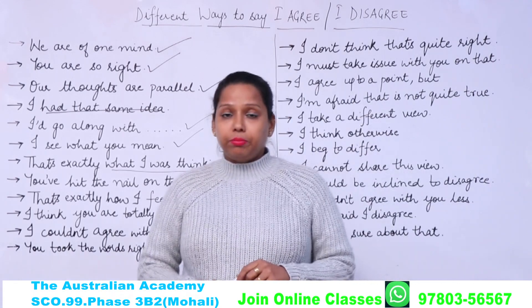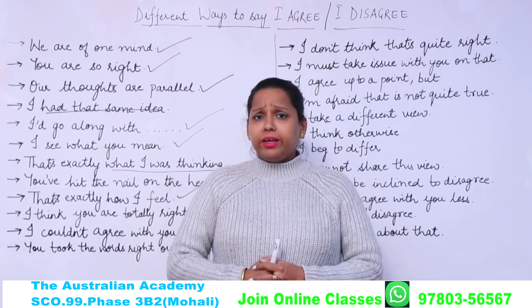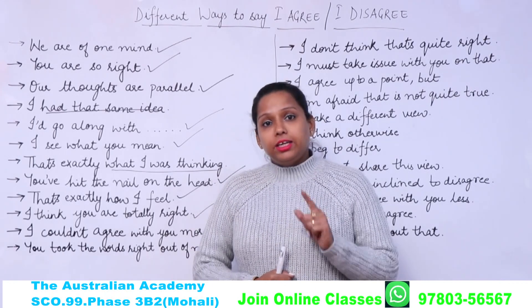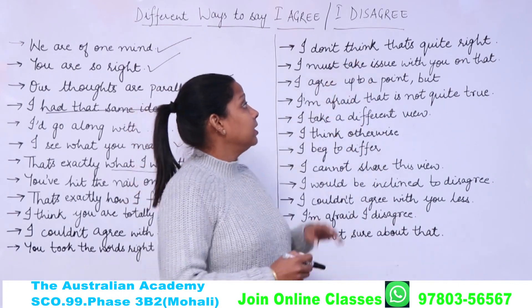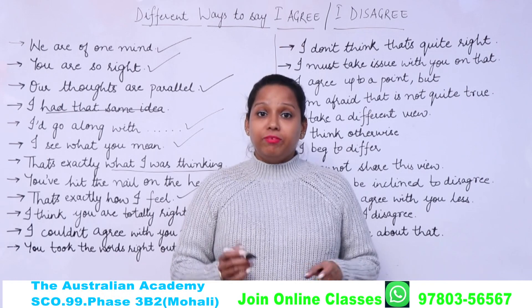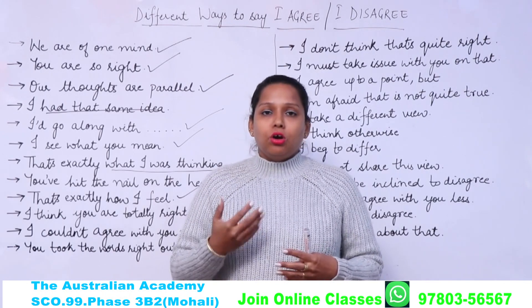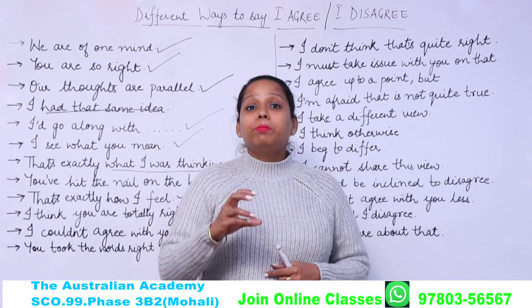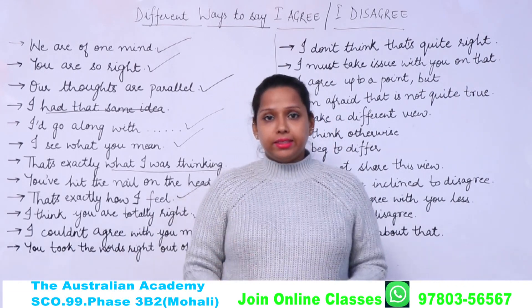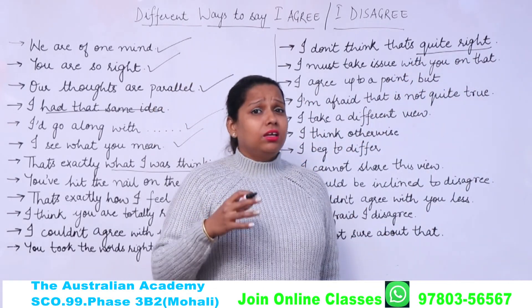Now let's move to the disagreement part. When I disagree with something but cannot answer bluntly — I cannot just say 'I don't like it' or 'I don't agree with that' — I need to be polite, whether in writing an essay or in speaking. So here are sentences to show disagreement politely. The first is 'I don't think that's quite right,' instead of bluntly saying 'that's not right.'